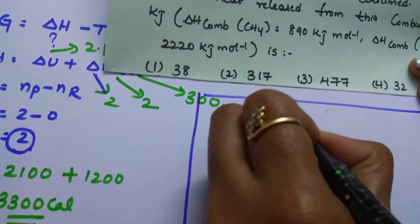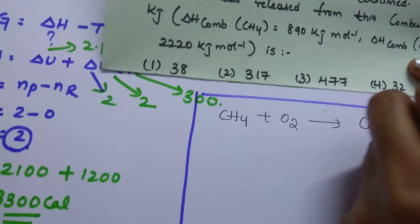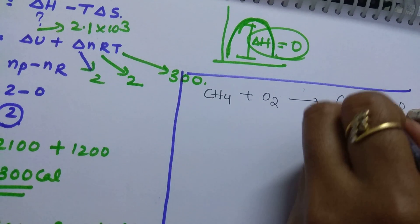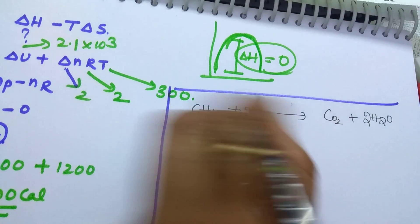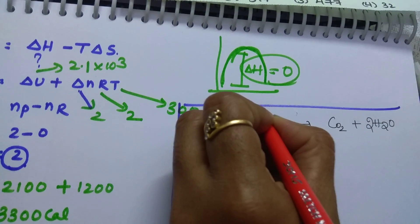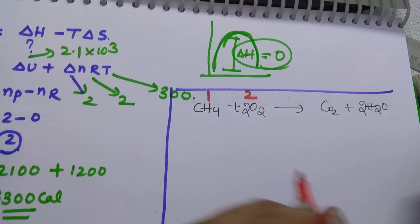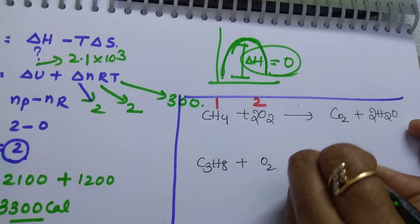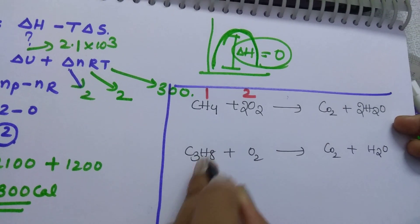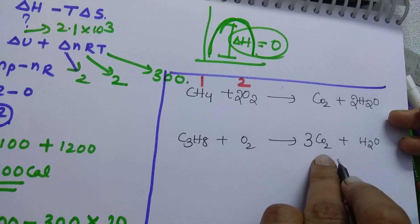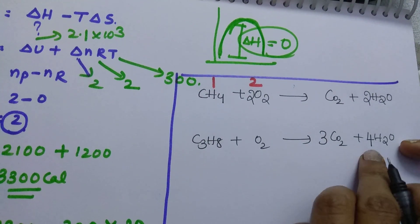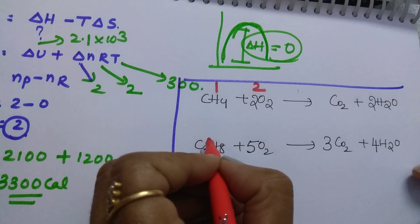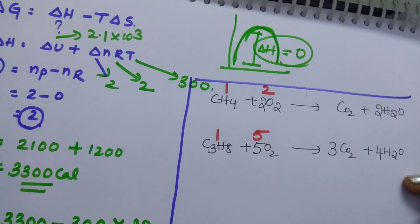Write the balanced reactions. Methane combustion: CH4 + 2O2 → CO2 + 2H2O — one mole of methane reacts with 2 moles of oxygen. Propane combustion: C3H8 + 5O2 → 3CO2 + 4H2O — one mole of propane requires 5 moles of oxygen. Let methane be X liters; then propane is (5 − X) liters.